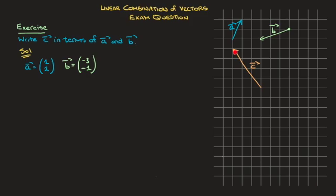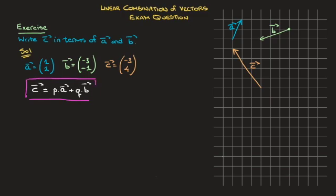Finally, looking at vector C, to get from its tail to its head, we need to move three units to the left and four units upwards. So vector C has components (-3, 4). Now, when we're asked to write C in terms of A and B, what that really means is we need to find the linear combination of the two vectors A and B which equals C. In other words, we need to find the value of two numbers, which I'll call P and Q, such that vector C equals P times vector A plus Q times vector B. That's a linear combination of the vectors A and B.